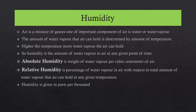Absolute humidity is the weight of water vapor per cubic centimeter of air. Relative humidity is the percentage of water vapor in the air with respect to the total amount of water vapor that air can hold at any given temperature. Humidity is given in parts per thousand. For example, when we say the temperature is 32 degrees and relative humidity is 75 percent, it means the air has 75 percent of the water vapors it can hold at 32 degrees Celsius.